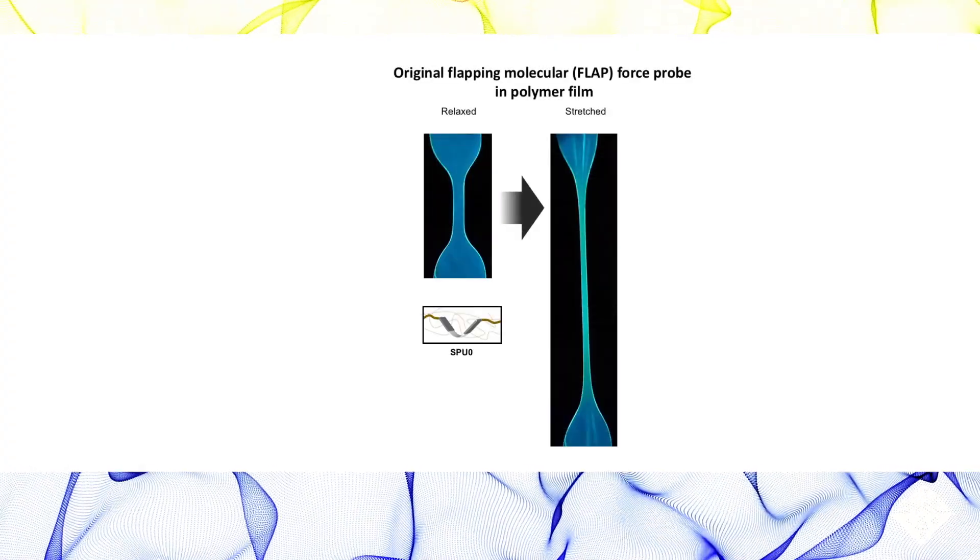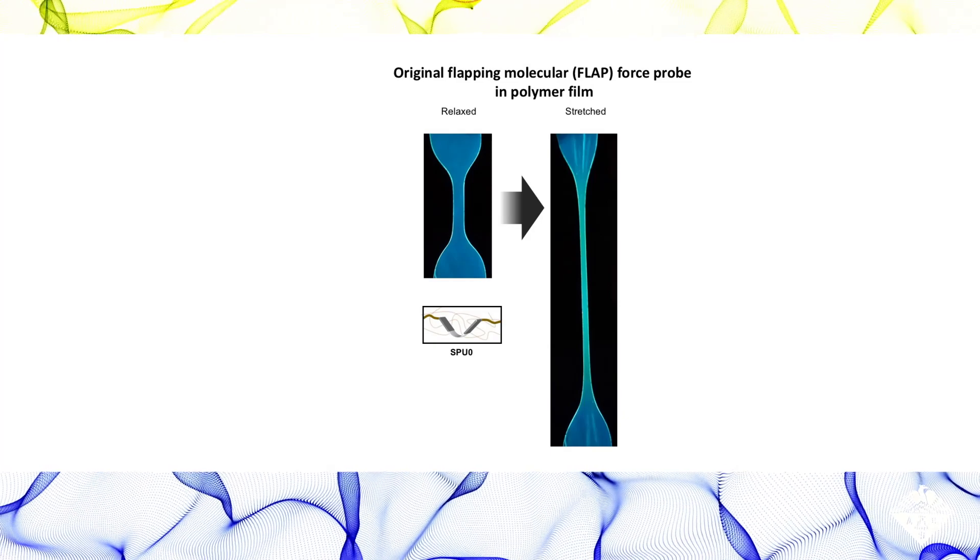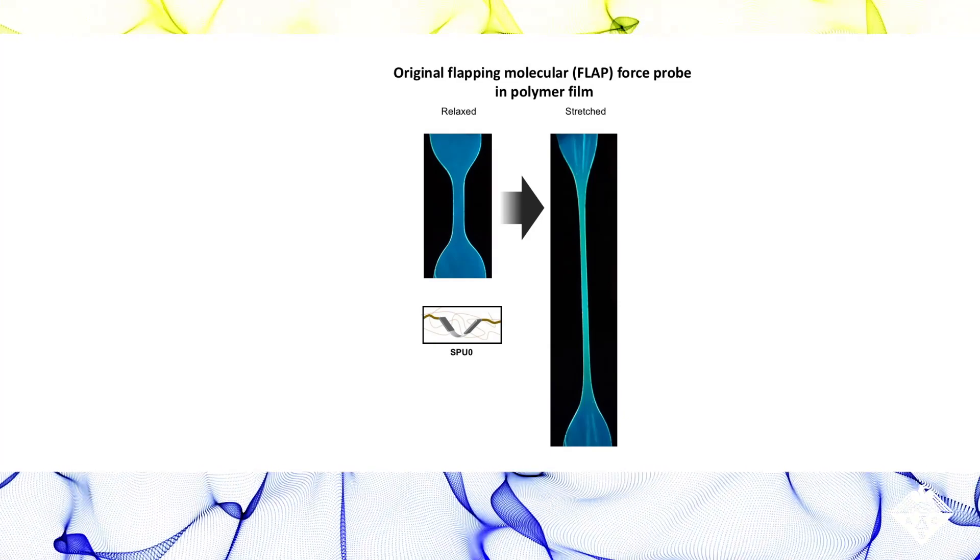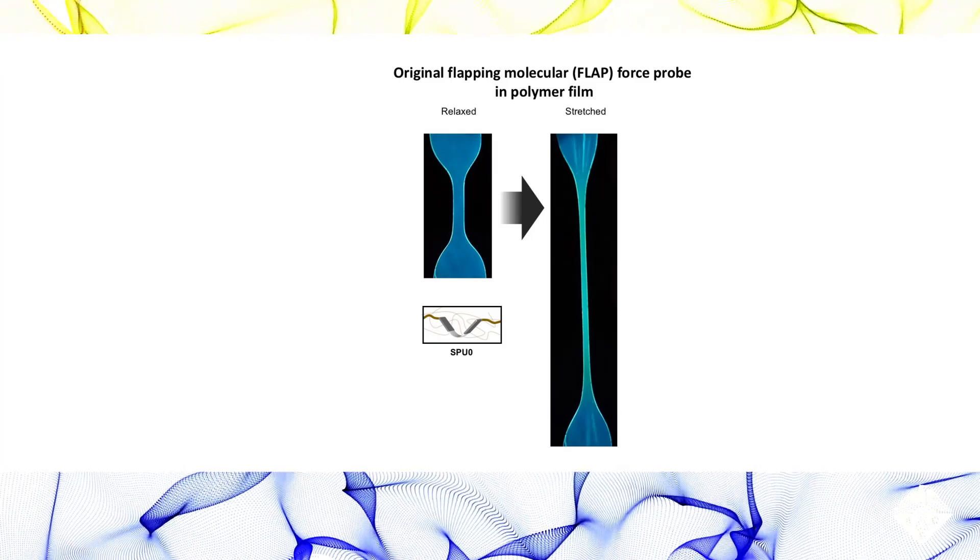Previously, Shohei Saito and colleagues developed wing-shaped molecules, known as flapping molecular force probes, or flaps, that changed from blue to green fluorescence when a polymer film was stressed.